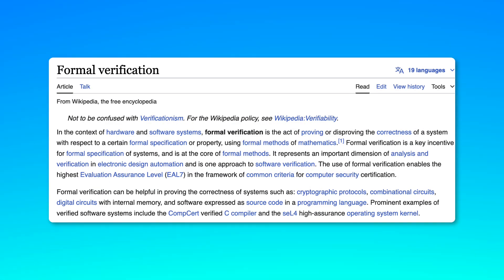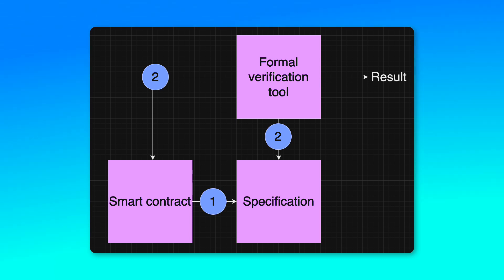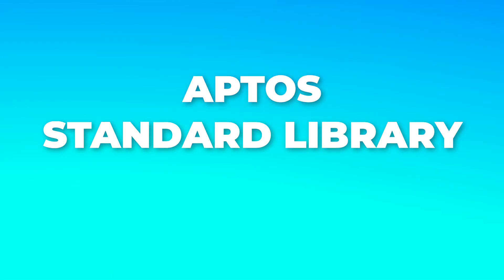Formal verification is a mathematical method for checking that a smart contract really does what it claims to do. You first have to describe what the smart contract does using a specification, and then you run a formal verification tool on this specification. And the entire Aptos standard library and framework are formally verified.